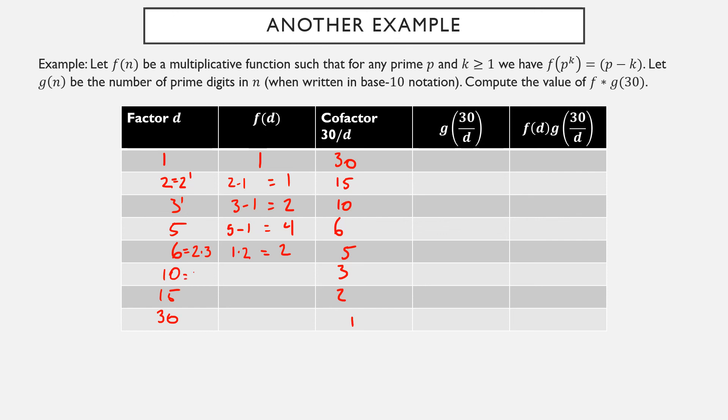Similarly, 10 can be written as the relatively prime product 2 times 5. So since f is multiplicative, f(10) must be f(2) times f(5). 1 times 4, that's 4. 15 can be factored as the prime product 3 times 5, so I get f(3) which is 2 times f(5) which is 4. 2 times 4 is 8. 30 can be represented as the relatively prime product 2 times 3 times 5. And since f is multiplicative, f(30) is going to be f(2) times f(3) times f(5). 1 times 2 times 4, 8.